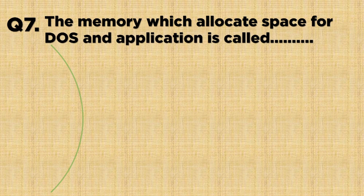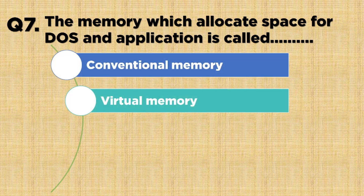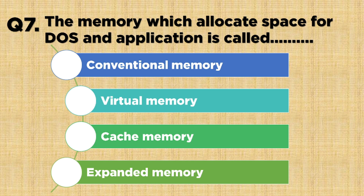Question number seven: the memory which allocates space for DOS and applications is called — Option A: Conventional Memory, Option B: Virtual Memory, Option C: Cache Memory, Option D: Expanded Memory. The correct answer is Option A: Conventional Memory.